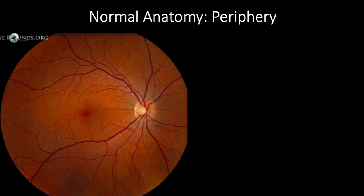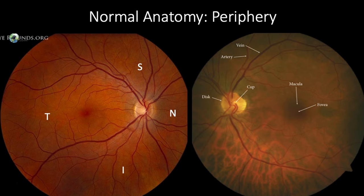Finally, we look at the periphery of the retina. The periphery is roughly broken down into four areas: superior, inferior, temporal, and nasal regions. The fundus is usually red; however, there is some variation in color depending on the amount of individual pigmentation and the visibility of the choroidal vessels beneath the retina.